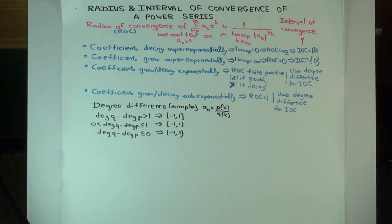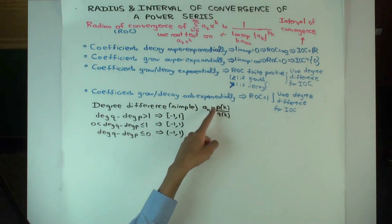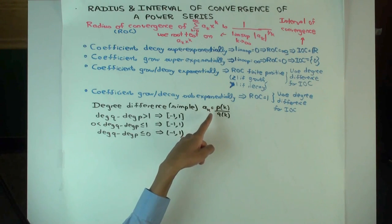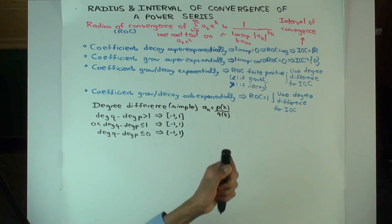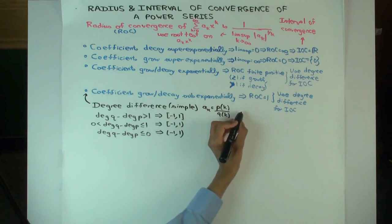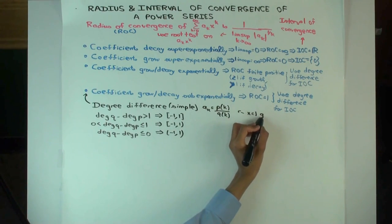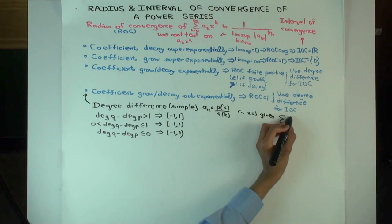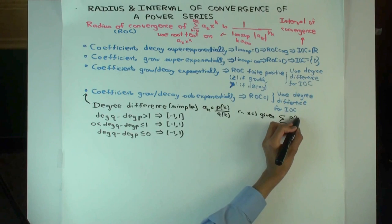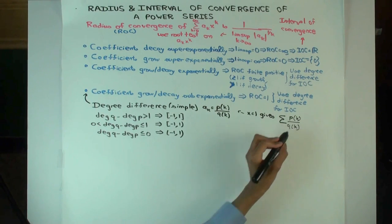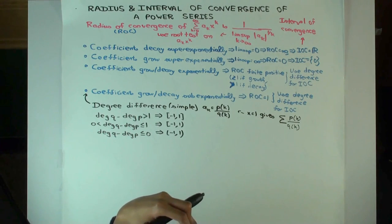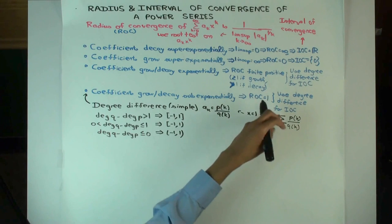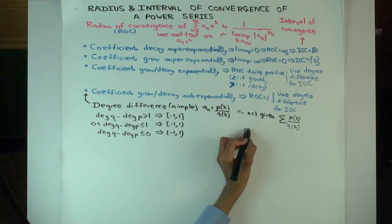For this, there's actually a test we consider called the degree difference test, which resolves some of the cases. Consider the situation where the coefficients are just rational functions in k. When you plug in x equal to one, you get just the summation of those rational functions. When we're trying to figure out convergence, we don't really care where the summation starts — whether it starts at 0, 1, 5, or 50. What about x equal to minus one? That gives you minus one to the k-th power times the rational function.